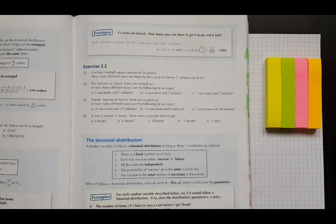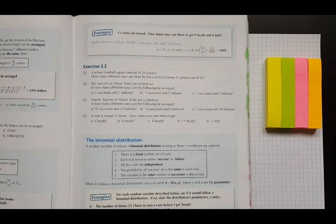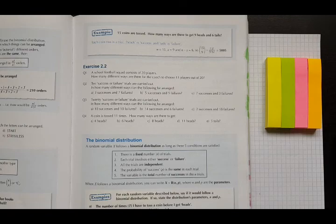The trials are independent. The color I pick on one trial is not going to affect what comes up next. And the probability of success is the same in each trial. So p, the probability of success, is the same in each trial. Yes, we would say here for each trial the probability of getting pink is one quarter. That's not going to change.